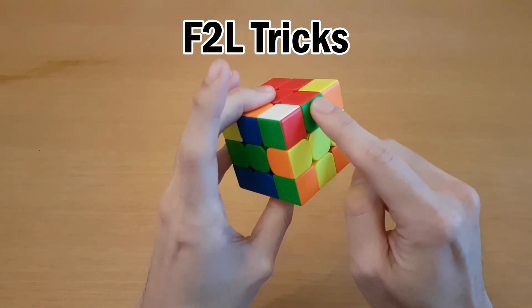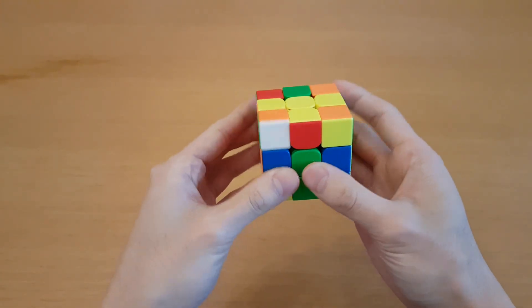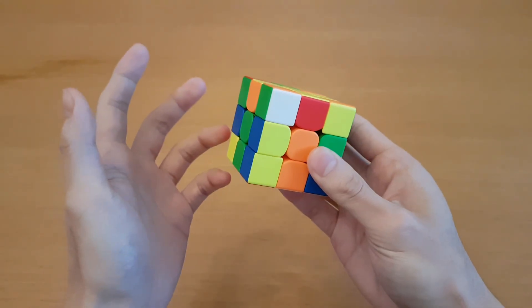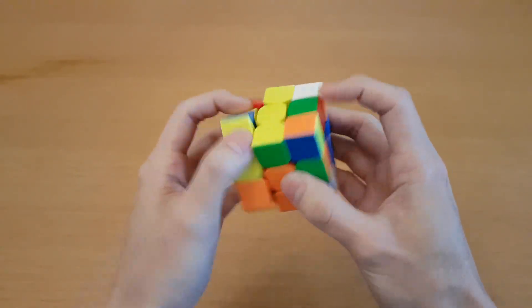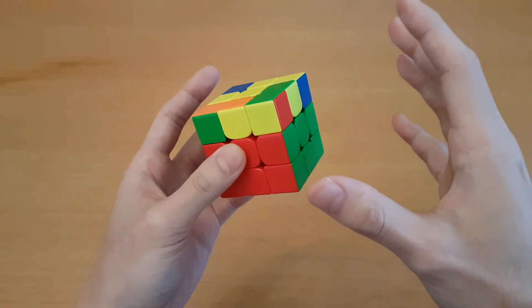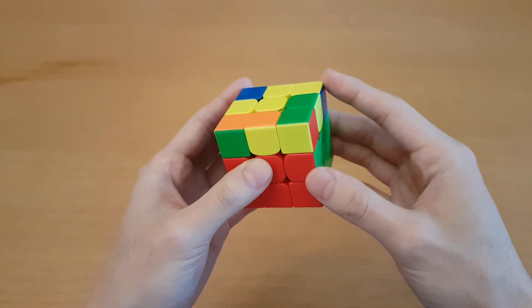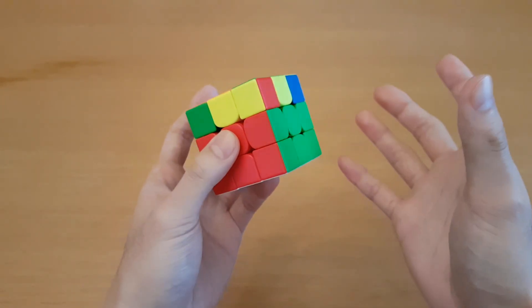Hey guys, today I'll be showing how to solve some F2L cases that look like they require one cube rotation, but instead there's one trick you can use to make them rotationless. I've shown this trick for specific cases in previous videos, but I've never shown when you should generally choose to use it.